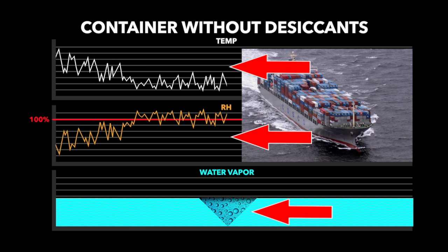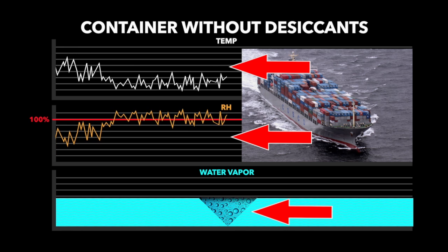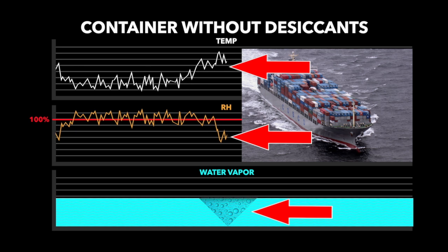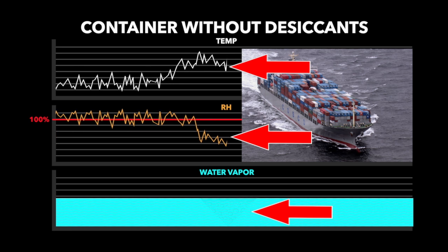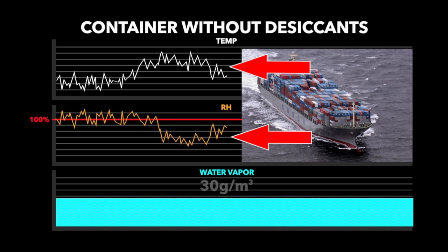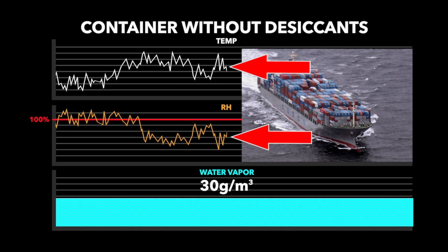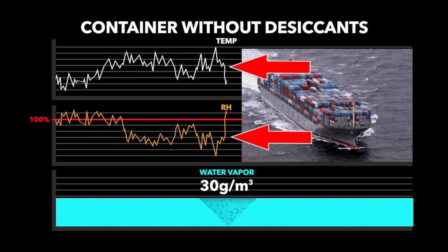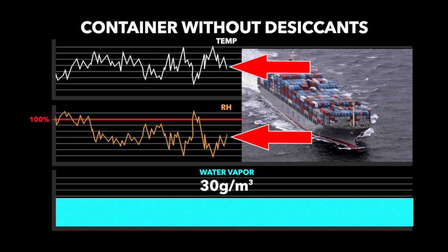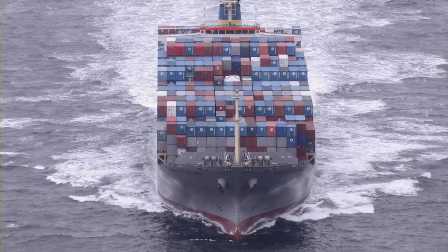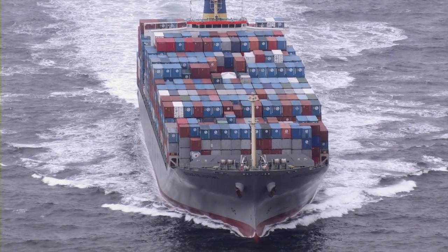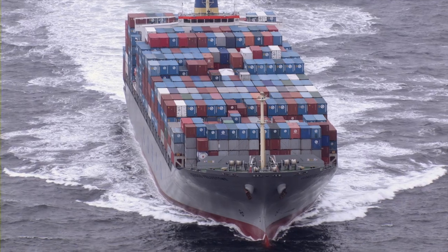Some of the 30 grams of water vapor will start to condensate as water droplets, which can damage cargo. When the temperature in the container rises, the condensated water vapor will re-evaporate, and the amount of water vapor in the air will once again be 30 grams per cubic meter. Without desiccants, the amount of water vapor in the air remains about the same during the entire voyage, increasing the risk for daily condensation events that will gradually damage the cargo.